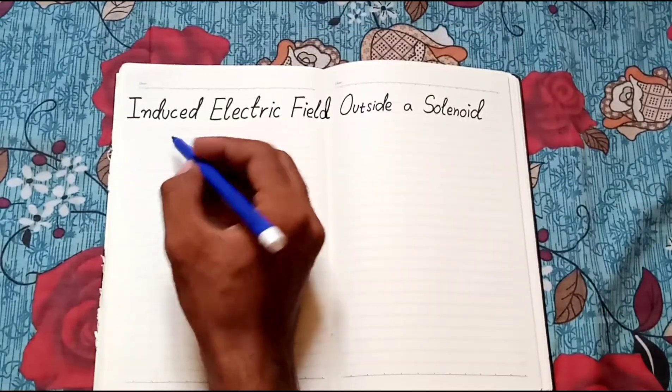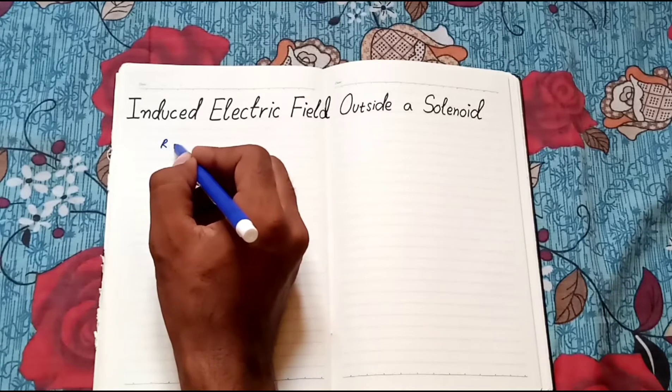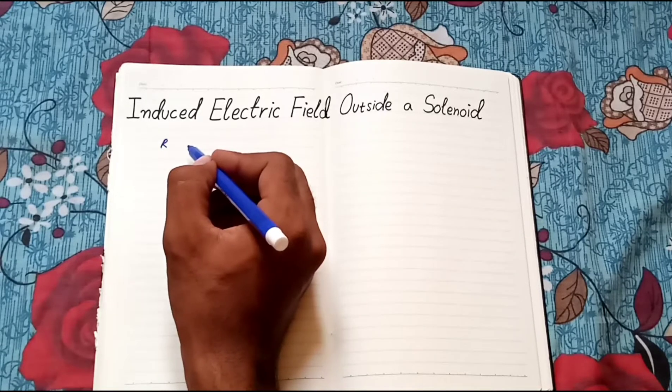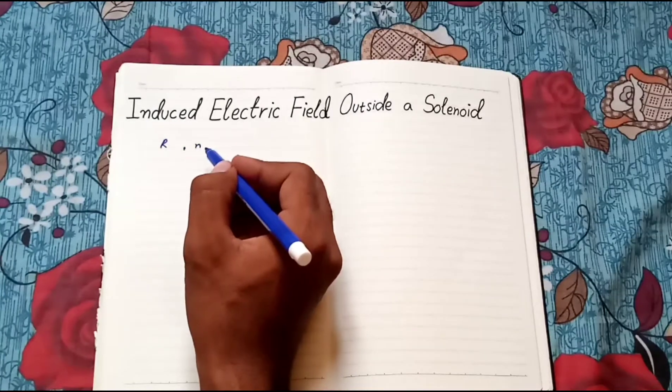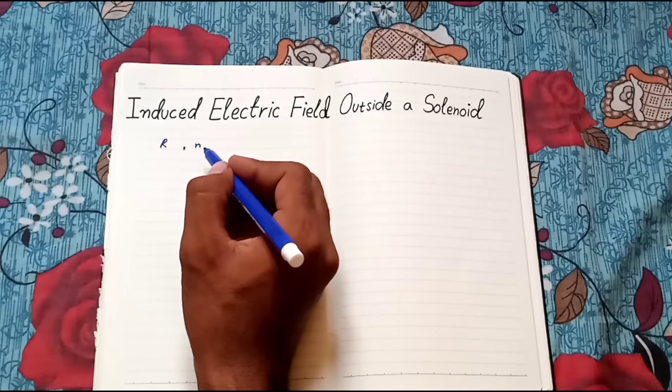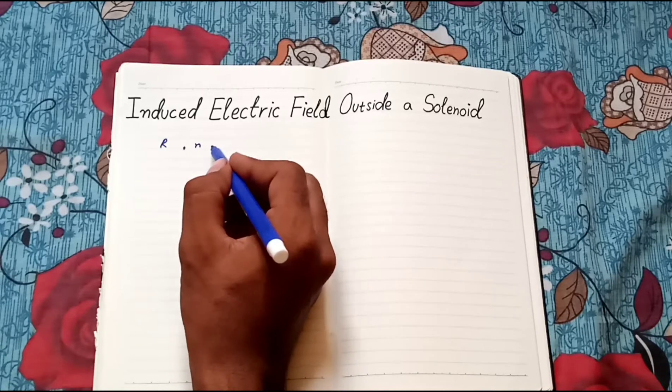Consider a long solenoid of radius r and has n turns in unit length and carries a time-varying current i.